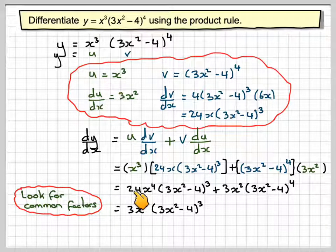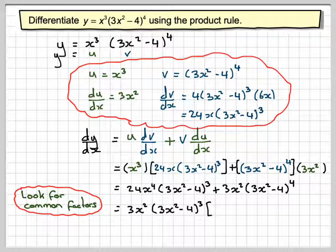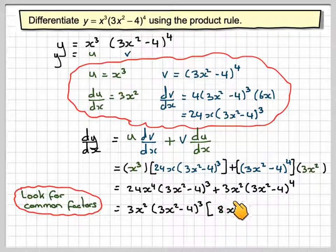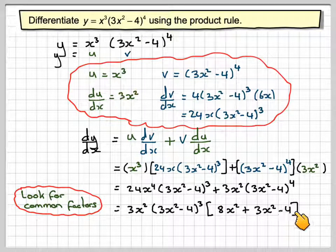Now what have we got left? So in order to get 3 here, we're going to have 8x squared. This has all been taken out, so we don't need to put anything in here, we need to put in a plus sign. And then we've got just one of these 3x squared minus 4 at the end.